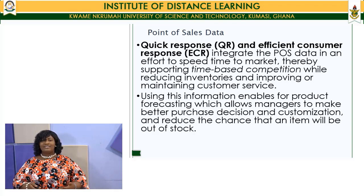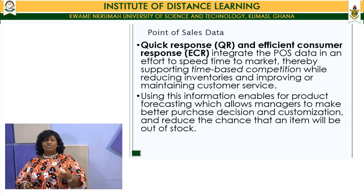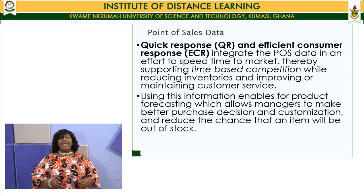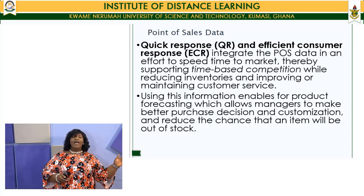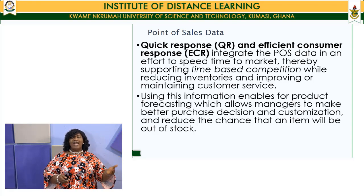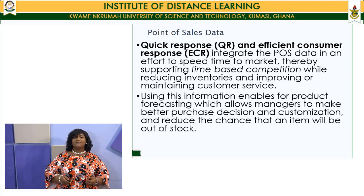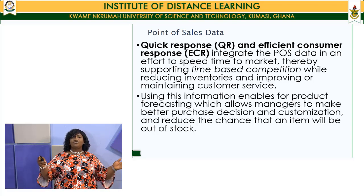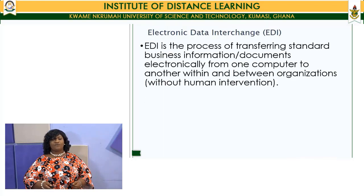POS enables better purchase decisions and reduces the chance that an item will be out of stock. Managers are able to use real-time data, which is why POS is one of the suggested approaches to dealing with the bullwhip effect. Instead of extrapolating past trends into the future, managers get access to real-time data and use that to forecast, achieving high levels of accuracy. Managers no longer have the luxury to do forecasting over a very long time horizon because of competition. Time-based competition necessitates speed — every effort towards forecasting must yield high accuracy, and forecasting over a longer time horizon can record many errors.